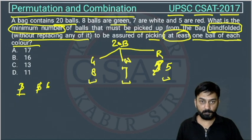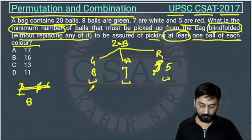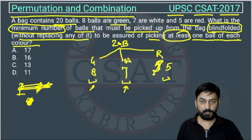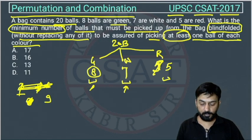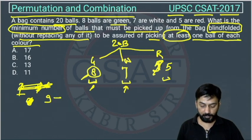In these kinds of cases, we consider the maximum count. The maximum is 8 (green). If I pick 8 balls, I cannot be sure of different colors — they could all be green. If I pick 9 balls, there may be a possibility that 8 are green and one must be of another color, so with 9 balls we are guaranteed at least two colors.